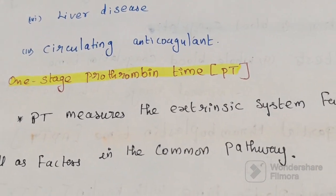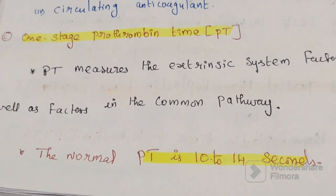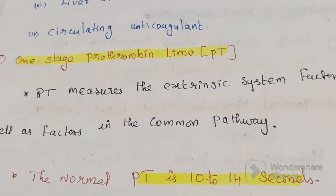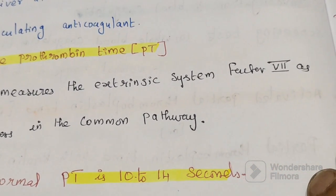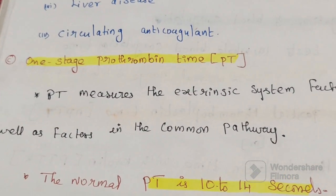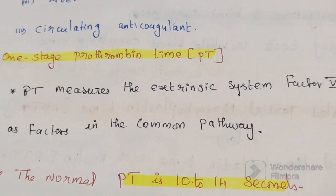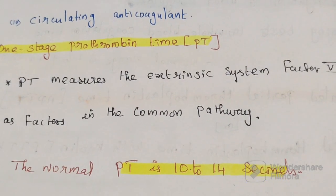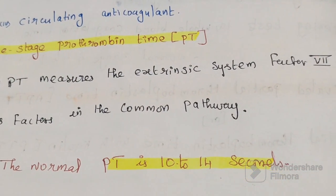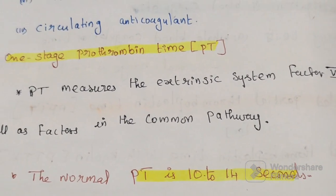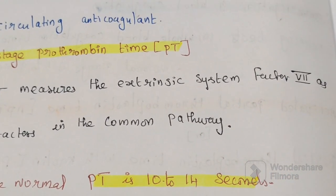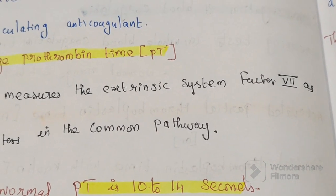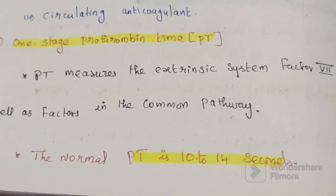The third screening test is one-stage prothrombin time. Prothrombin time measures the extrinsic system factor 7, as well as factors in the common pathway. The normal prothrombin time is 10 to 14 seconds.